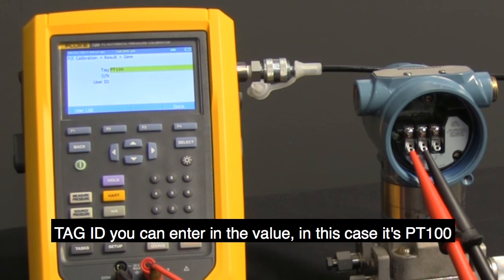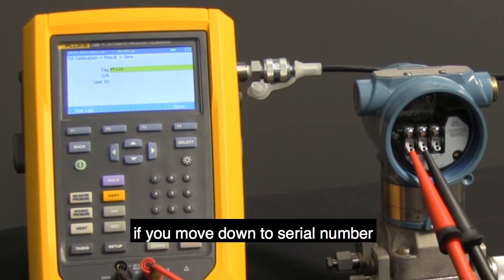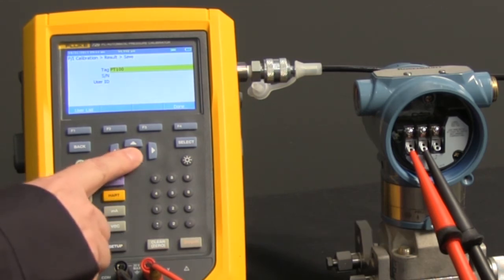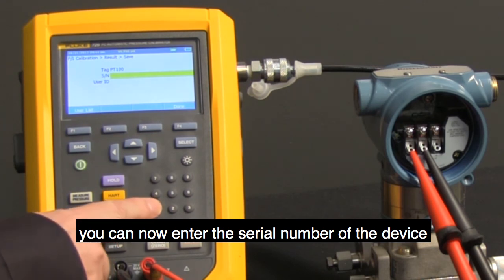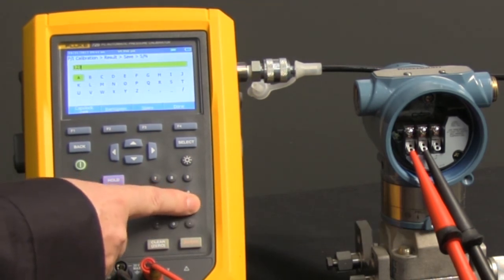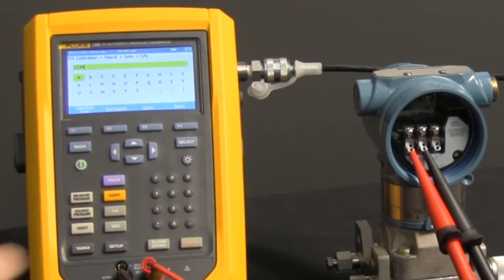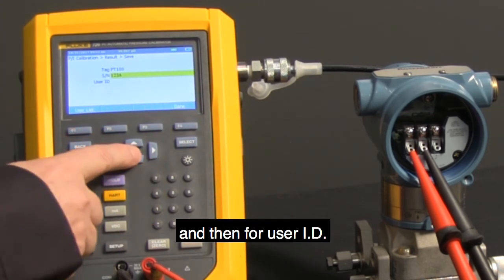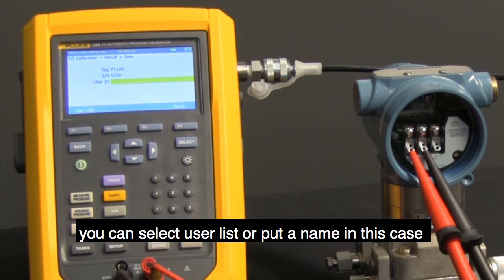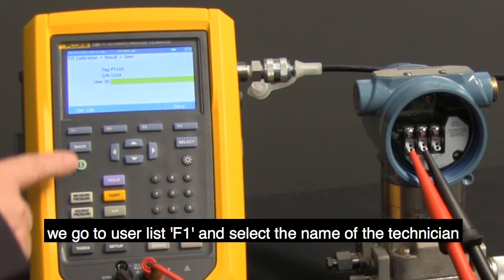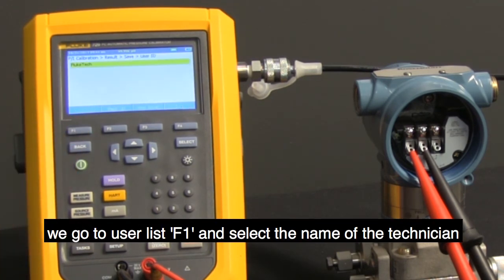Tag ID is, you can enter in the value, in this case it's PT100. If you move down to seal number, you can now enter the seal number of the device. And then for user ID, you can select user list or put a name in, in this case we can go to user list F1 and select the name of the technician.